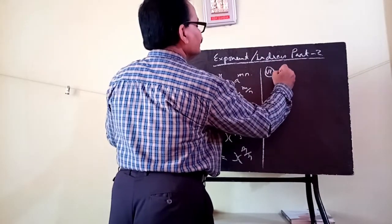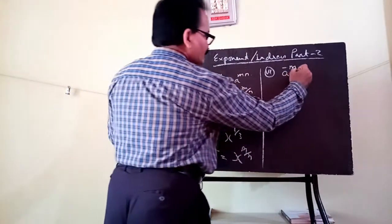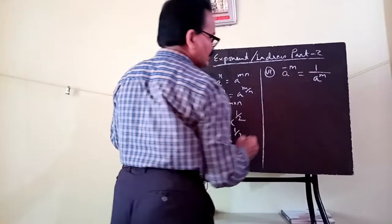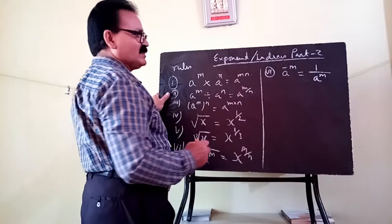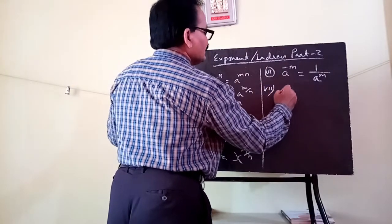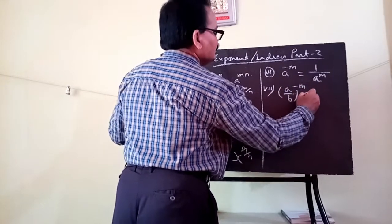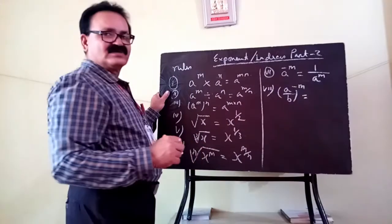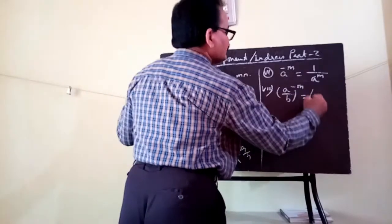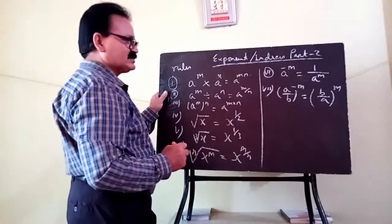If you have a to the power minus m — that is the negative exponential — you first convert it to positive exponential by taking the reciprocal: 1 by a to the power m. Then, if the base is a fraction and the power is negative, to convert to a positive power you simply reciprocate — b by a to the power m — and it becomes positive.